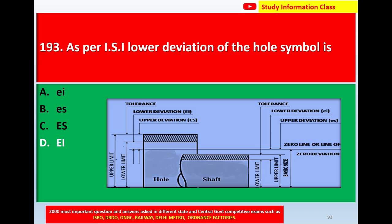This is the diagram of the hole and shaft symbols and nomenclature. Here EI is the lower deviation, ES is the upper deviation, with zero line and zero deviation. Similarly, lower limit and upper limit — upper deviation ES and lower deviation EI.